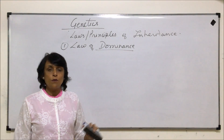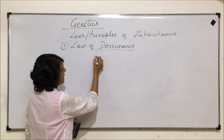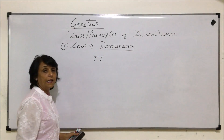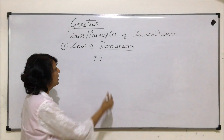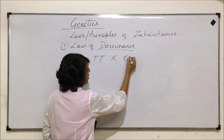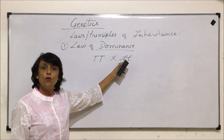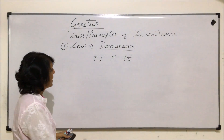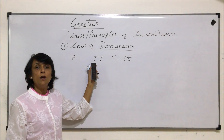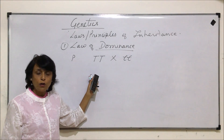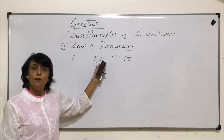To understand this law, let us take one simple example. Suppose we start with a pure line — that is pure tall, homozygous tall — crossed with pure short, or homozygous recessive, or homozygous dwarf. This is the parent generation and we are starting with pure line. In Mendel's laws we always start with pure line.